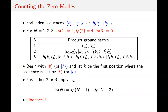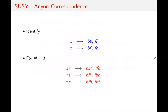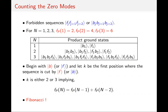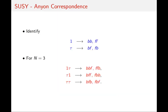Now one can already see the correspondence. The Fibonacci anyon fusion basis consists of sequences of 1's and τ's with no consecutive 1's, while the SUSY zero modes are sequences of b's and f's with no three consecutive identical characters. By providing a dictionary — identifying each 1 with a specific local state and τ with another — we can map between the two spaces and transfer the braid group construction to the supersymmetric system.